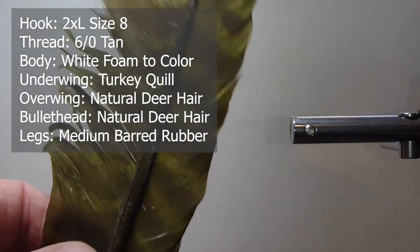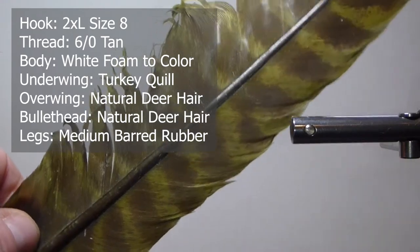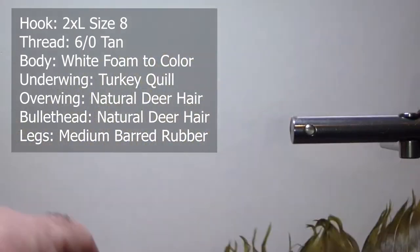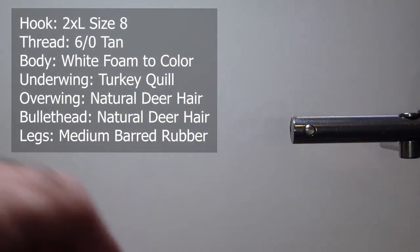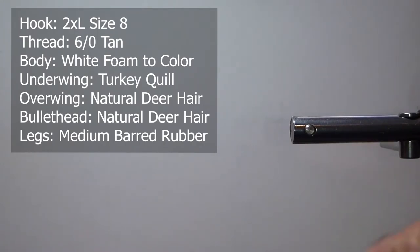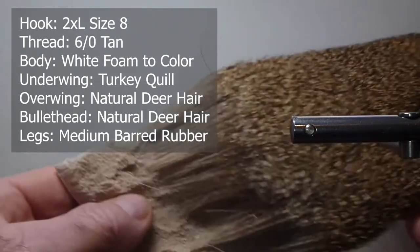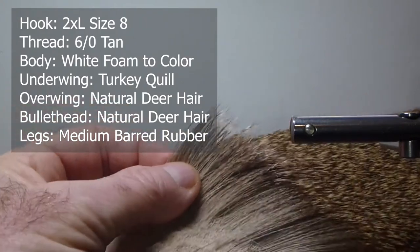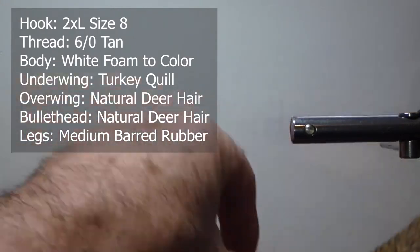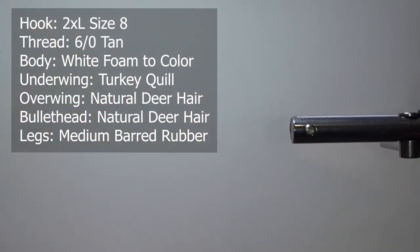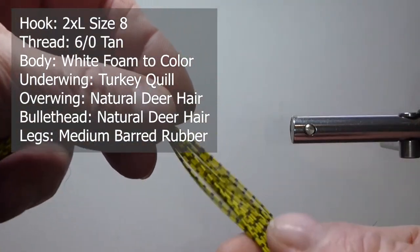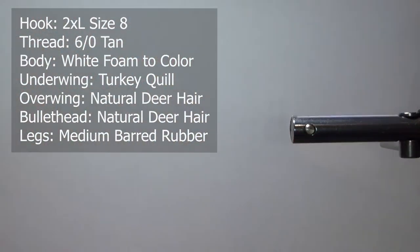The underwing I'm going to use some turkey quill. This is kind of a hopper green. It could make a pretty good cicada too, wouldn't it? The overwing and the bullet head, I'm going to use some nice, soft, long deer hair. Stack that, and then the legs. We're going to use some barred rubber legs material.